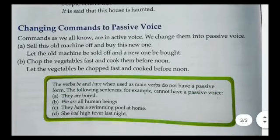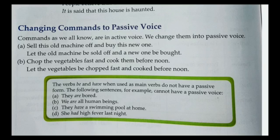The verbs 'be' and 'have,' when used as the main verb in a sentence, do not have a passive form. For example: 'They are bored' cannot become 'Bored are they.' 'They have a swimming pool' cannot become 'A swimming pool have they.' So remember — if 'is,' 'am,' 'are,' 'was,' 'were,' or 'has' is the only main verb with no other verb present, there is no passive form.